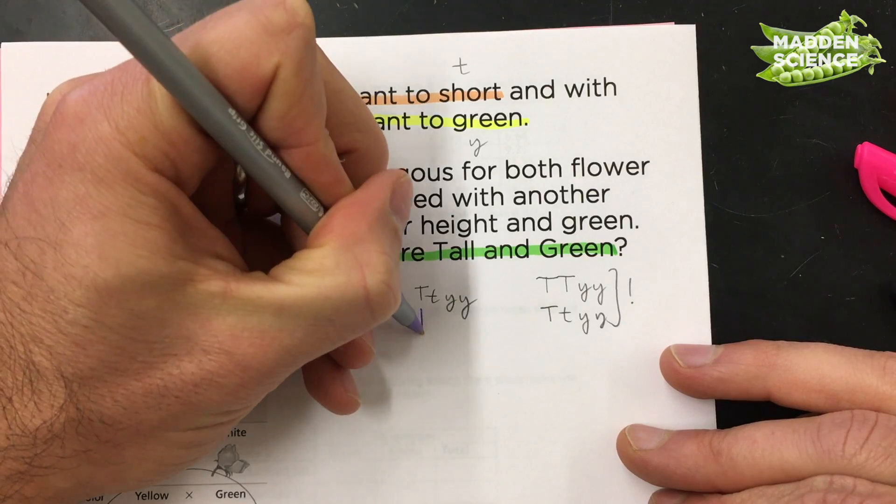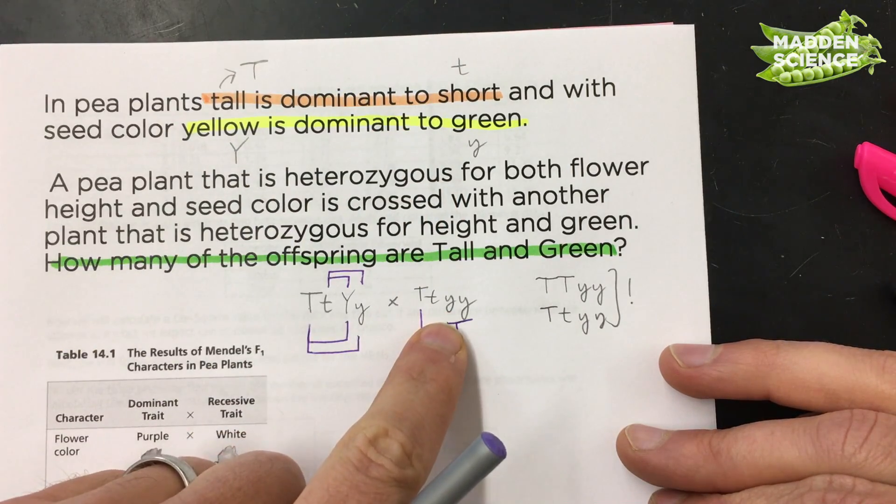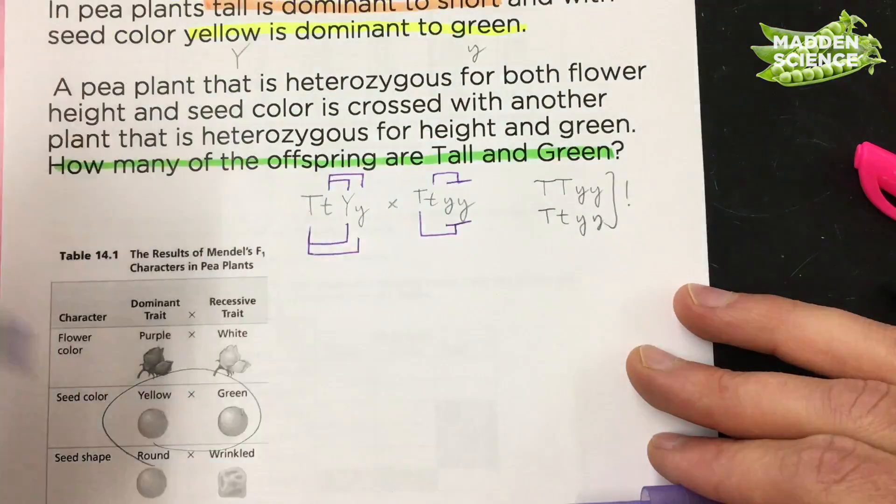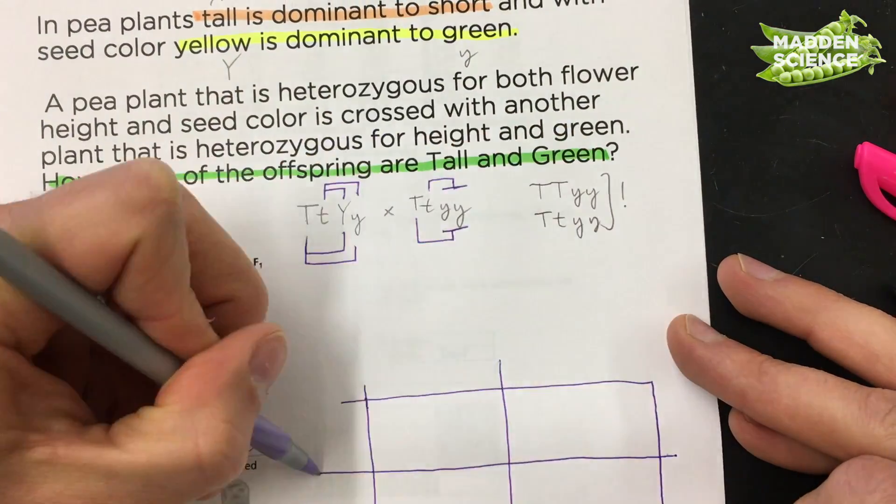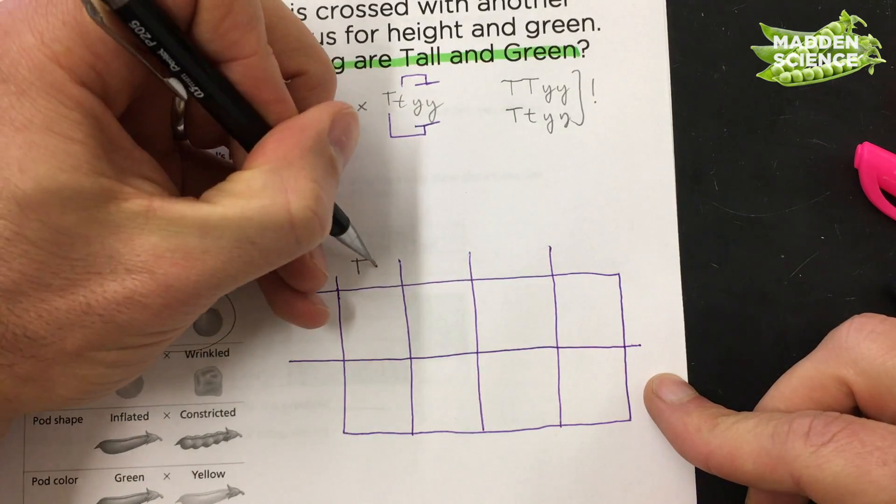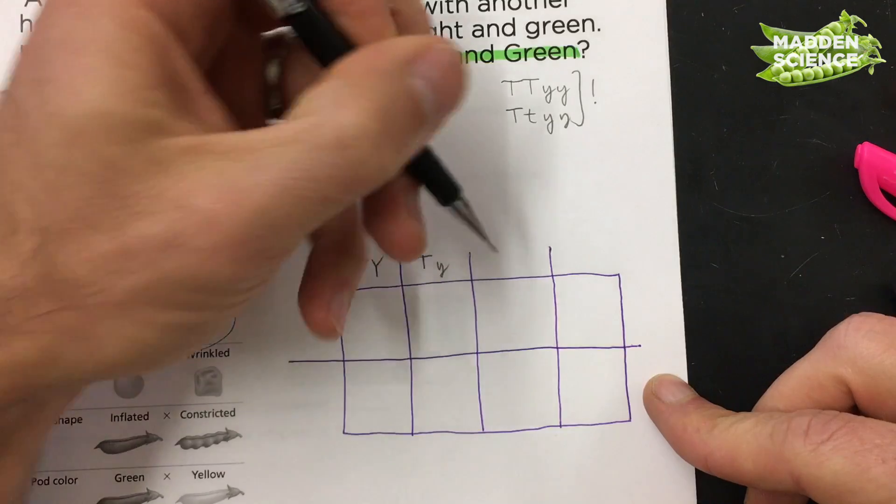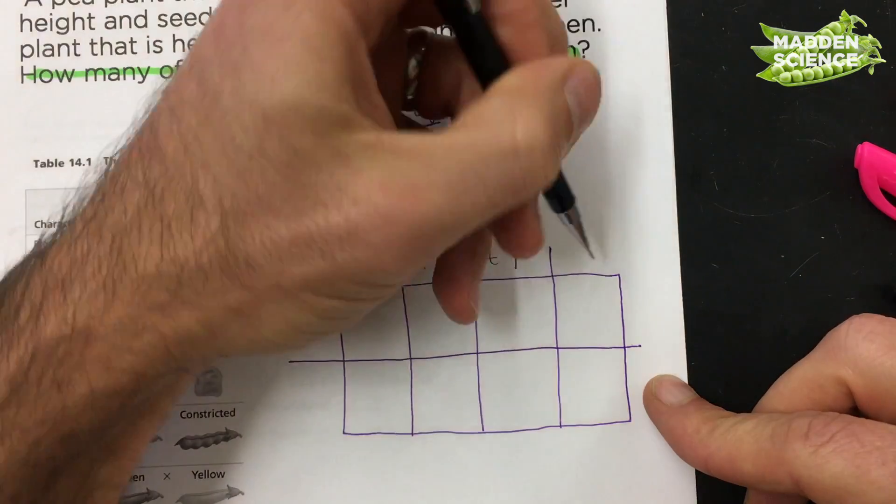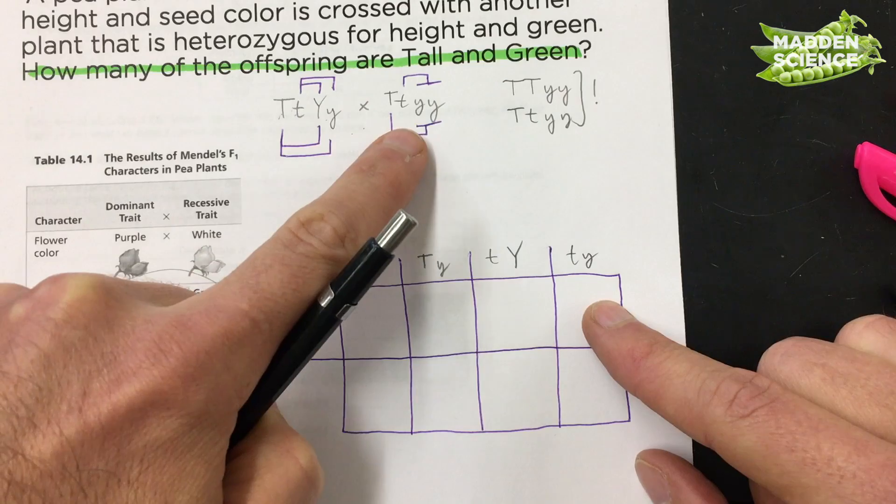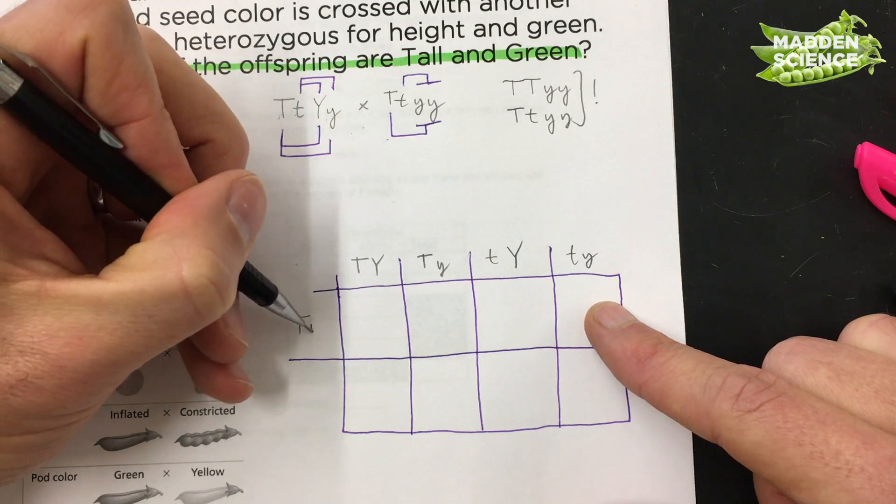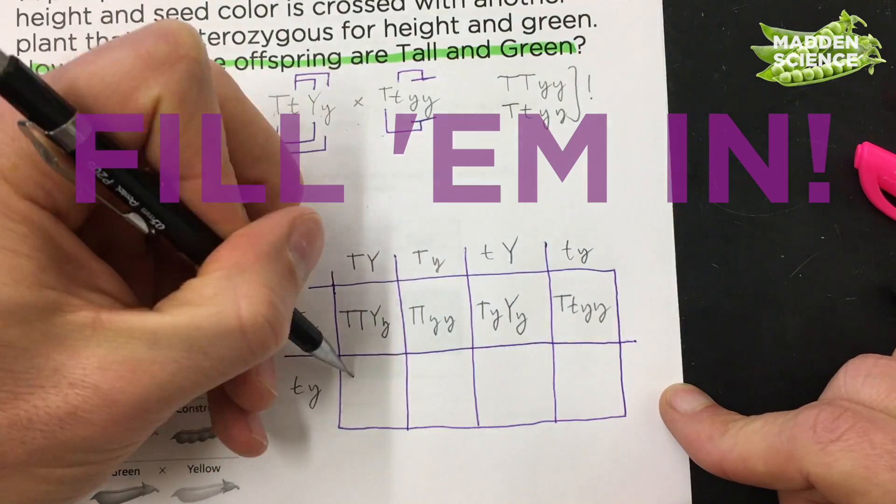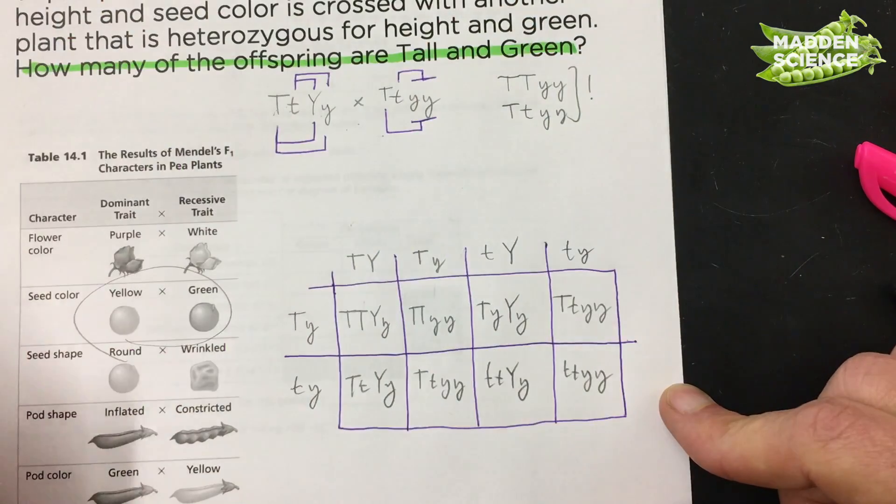For our other one, there's really only two possible gamete possibilities. So big T and little y, and little t and little y. Now if I want to go ahead and draw up a Punnett square for that. We're going to throw the four different possibilities from our heterozygous plant onto the top. So big T, big Y, big T, little y. Little t, big Y, and little t, little y. Those would be our four gamete possibilities. And from our second plant that's heterozygous for tall and it's green, you got just two possibilities. Big T, little y, and little t, little y.